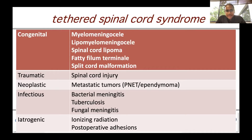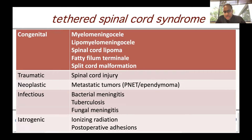Tethered spinal cord can also occur because of a spinal cord injury in the setting of trauma, in the setting of a tumor (metastatic or primary), in the setting of an infection such as bacterial meningitis, tuberculosis, or fungal meningitis, and also in the setting of ionizing radiation or postoperative adhesions.